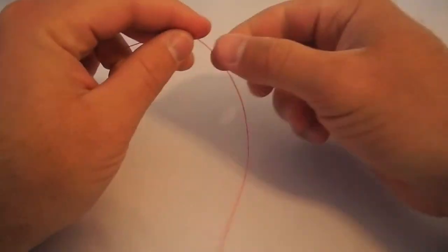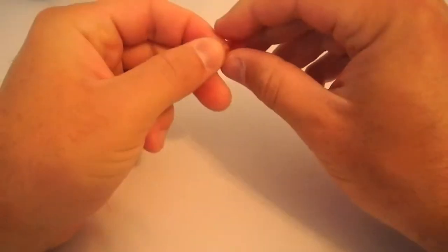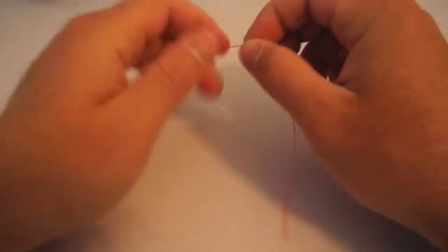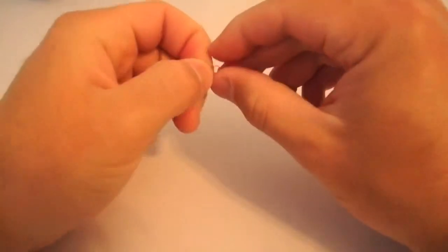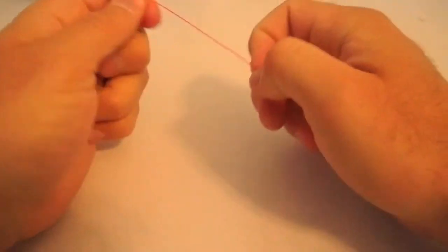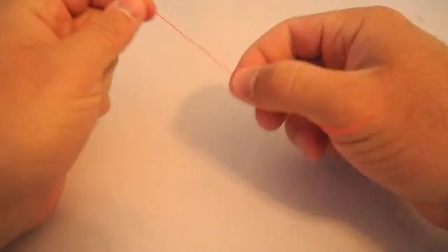What we're going to be tying here is the surgeon's loop. This is a great alternative to the perfection loop because it's much easier to tie. It is a little bulkier and doesn't slide through the guides quite as easily, but it's very easy to tie. Just about anybody can do it.